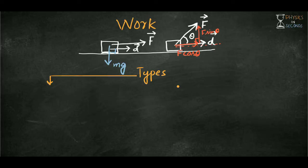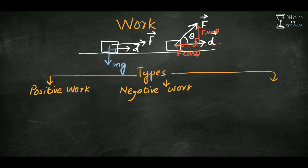Work has three types: positive work, negative work, and zero work. These three types are classified based on the angle between force and displacement.